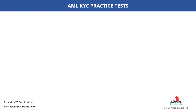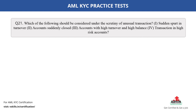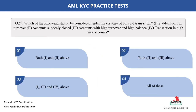Question number 21. Which of the following should be considered under the scrutiny of unusual transaction? 1. Sudden spurt in turnover; 2. Accounts suddenly closed; 3. Accounts with high turnover and high balance; 4. Transaction in high risk accounts. The options are: A. Both 1 and 2 above; B. Both 2 and 3 above; C. 1, 2 and 4 above; D. All of these. The correct answer is option C.